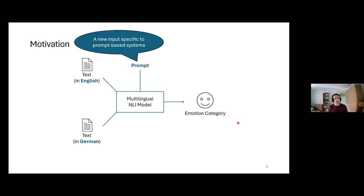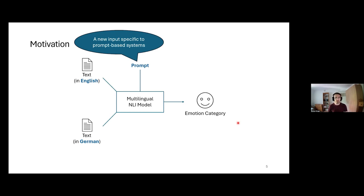In this setting we introduce an additional new input: the prompt. We can choose how exactly to word things and that can affect how well the model does emotion classification. While there's quite some work on designing good prompts for English text, it is unclear how the prompt should look when classifying texts in other languages. For instance, in a multilingual model we could choose an English prompt or translate it to German for German text. That is exactly what we wanted to investigate: how should the prompt look to classify emotions across different languages?